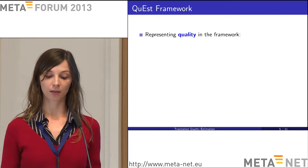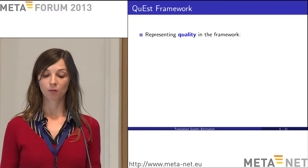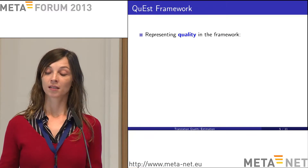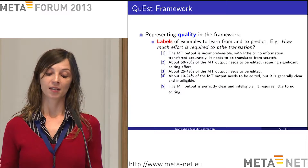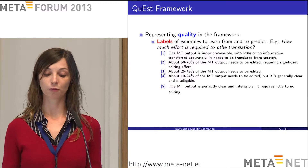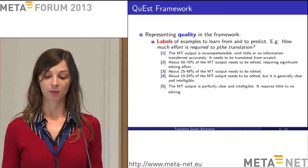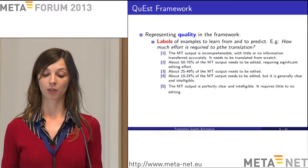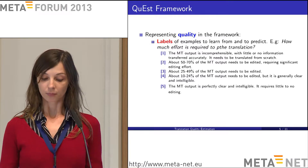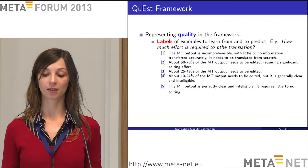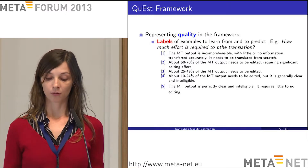There are two main ways we represent quality in this framework. One is through labels — post-editing time could be one type. The example I'm giving here is a subjective post-editing effort judgment from one to five: one means the translation is rubbish, throw it away; five means it's perfect or near-perfect. In between, the scores indicate what percentage of words would need to be post-edited to fix the translation. The other source of quality information is features extracted from the input texts and translations.